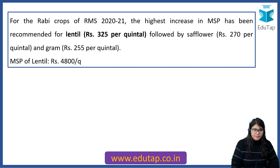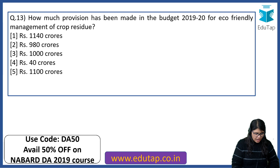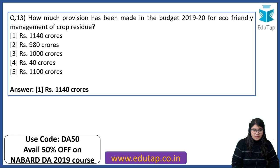How much provision has been made in the budget 2019-20 for eco-friendly management of crop residue? The right answer is Rs. 1140 crore, which has been allocated for eco-friendly management of crop residue.